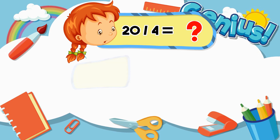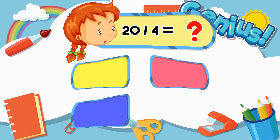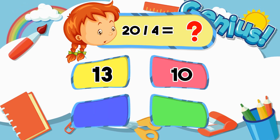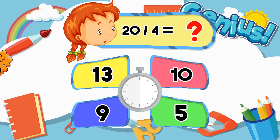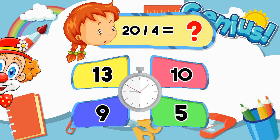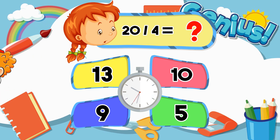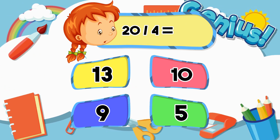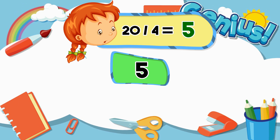What is 20 divided by 4? Options: 4, 13, 10, 9, 5. The answer is 5.